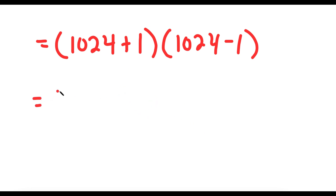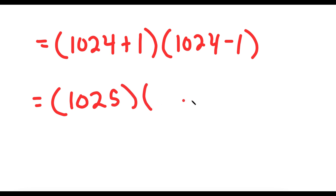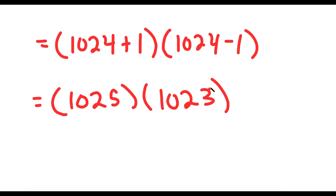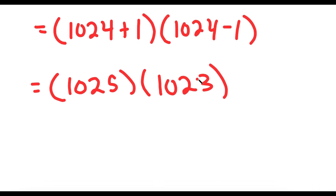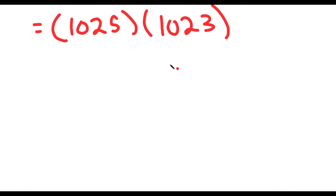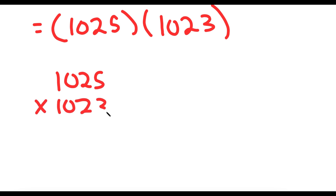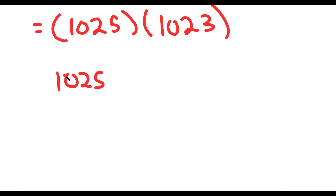So I get 1,024 plus 1 times 1,024 minus 1. Now, 1,024 plus 1 is 1,025 and 1,024 minus 1 is 1,023, so now I have 1,025 times 1,023. To multiply these two, I'm not going to use the basic multiplication method because that takes way too long.